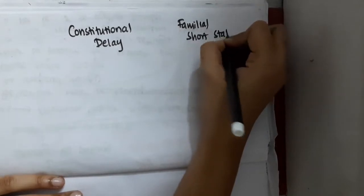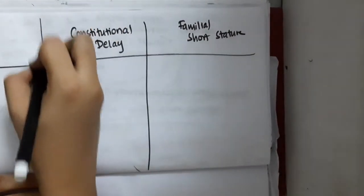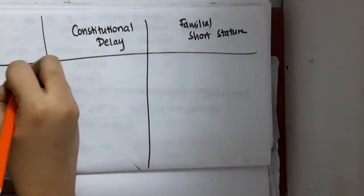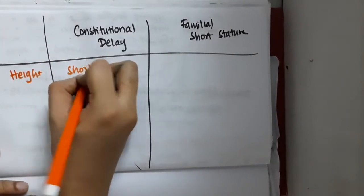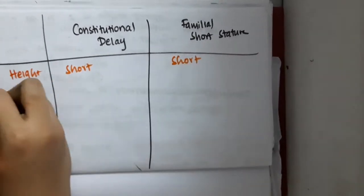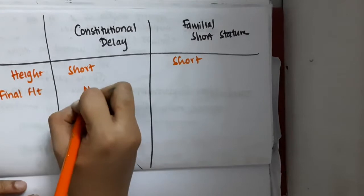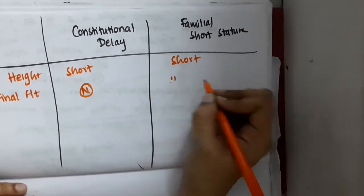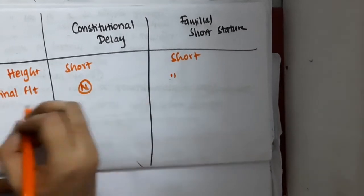If you see the differences, the height in constitutional delay is short, whereas familial short stature is short again. However, the final height is normal in constitutional delay, whereas in familial short stature, the final height is short.